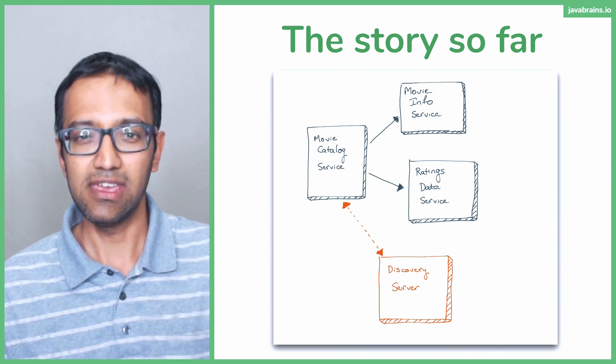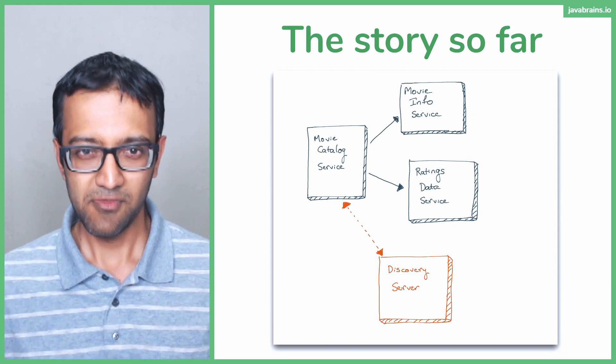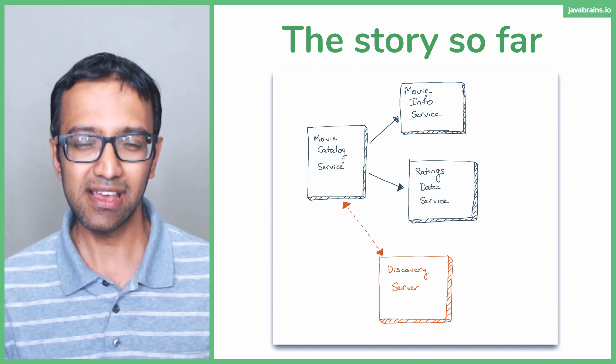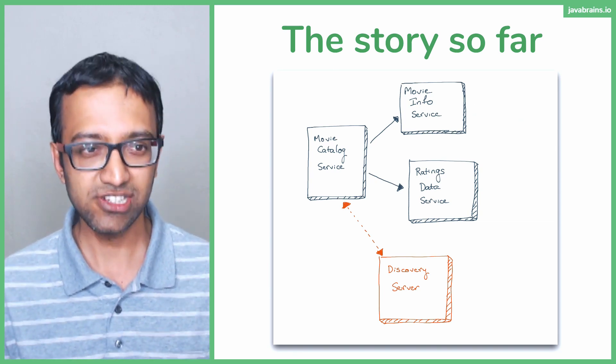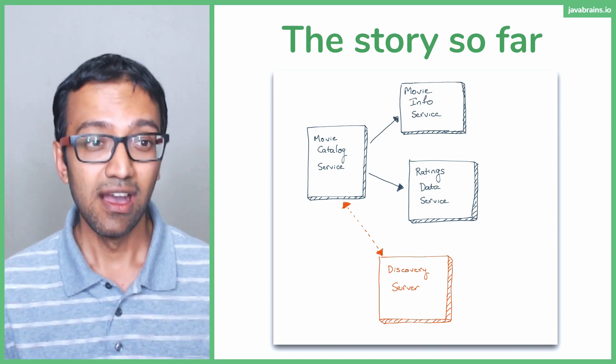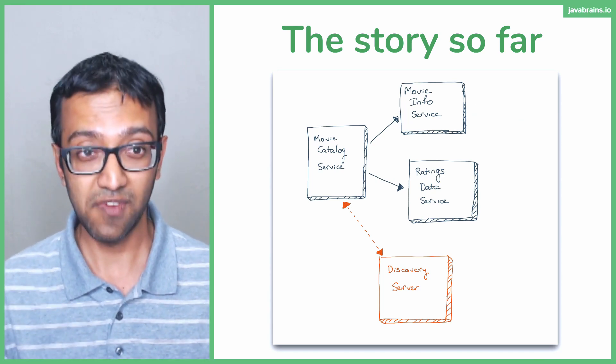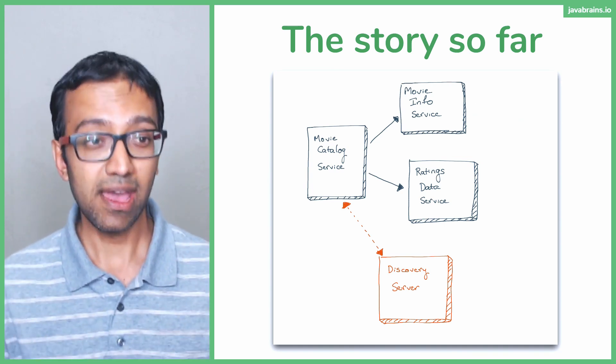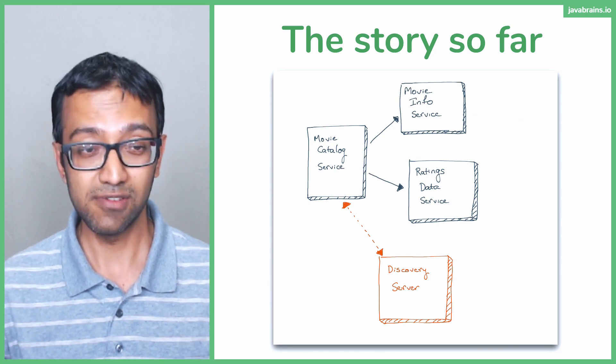We created specifically three microservices and had them talk to each other. We created an application which is kind of like Goodreads, kind of like IMDB, which is basically people being able to save the movies that they have watched and rate them. I can go to the system and say I have seen these five movies last year and then this is how I rate these five movies. That's basically how it goes.